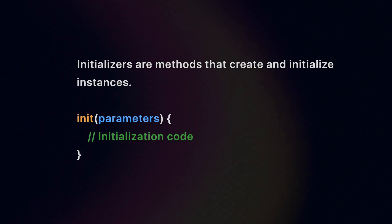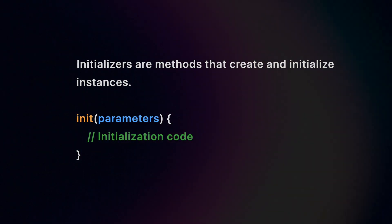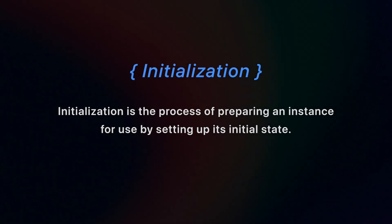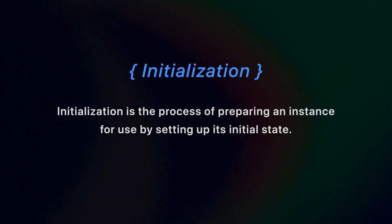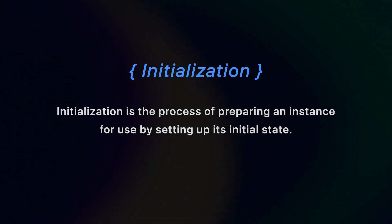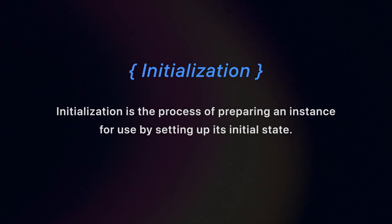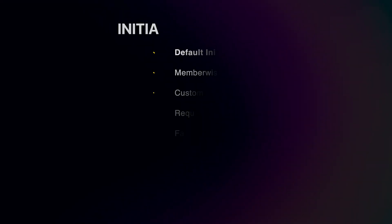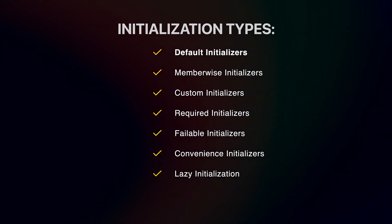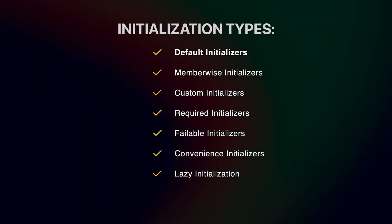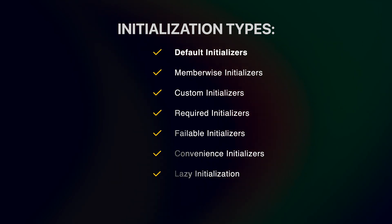There are several ways to initialize instances of classes, structures, enums, and actors. Initialization is the process of preparing an instance for use by setting up its initial state. Here are the various types of initialization available in Swift.